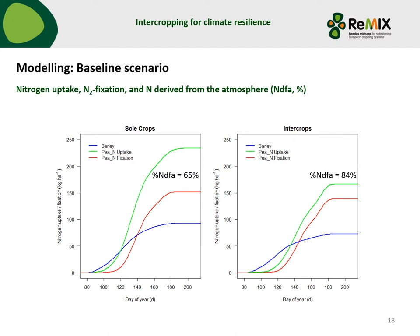Here are simulations for sole crops and intercrops showing nitrogen uptake during the season: in blue is the nitrogen uptake of barley, in green the nitrogen uptake of pea, and in red the nitrogen fixation of pea as part of its total nitrogen uptake. For sole crops, 65% of pea's uptake was derived by N2 fixation. For the intercrop pea, 84% of nitrogen uptake was derived by N2 fixation, because the intercrop barley takes up more nitrogen, reducing mineral nitrogen in the soil and thus stimulating N2 fixation of the pea.